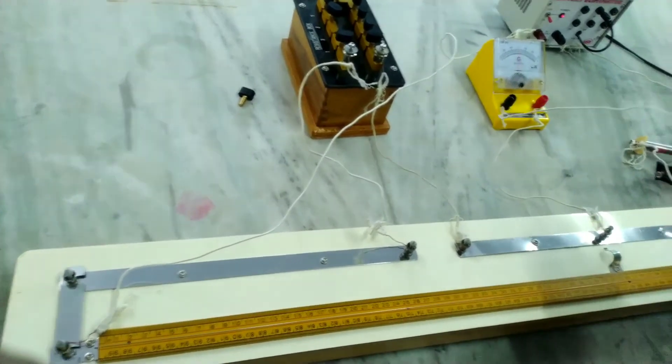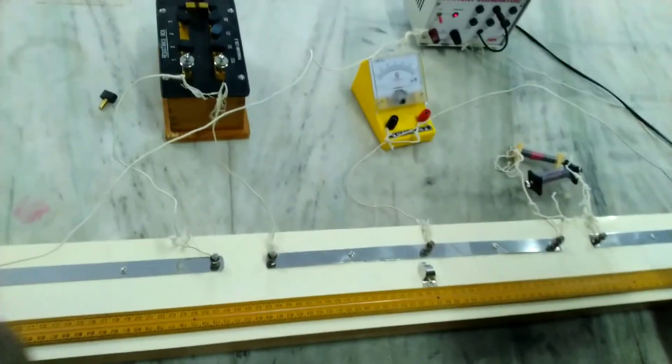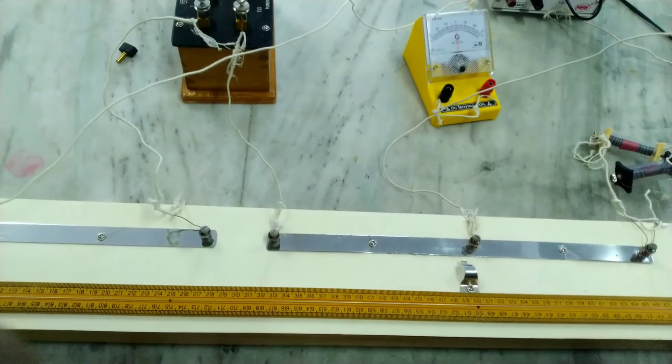Now take the jockey on the right side and see the deflection in the galvanometer. Now it goes to the right side. The connection is correct.